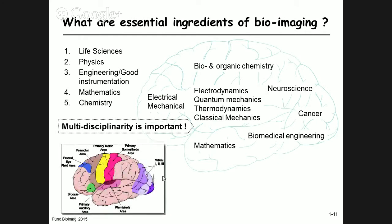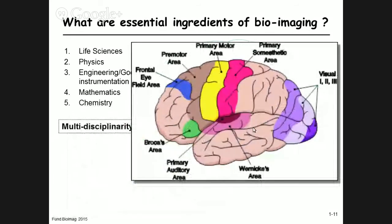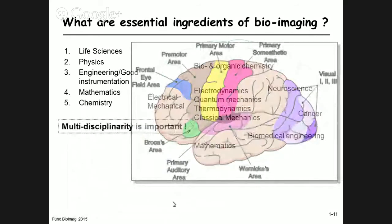Our brain can do many things simultaneously — see, hear, smell, taste, and think — so we're well adapted to this kind of multidisciplinary challenge. As an engineering school, we just have to draw on all the different areas we've been exposed to. We won't do a full course on biochemistry or quantum mechanics, but we'll touch on those fields and show where they come into play.